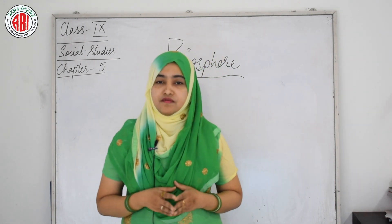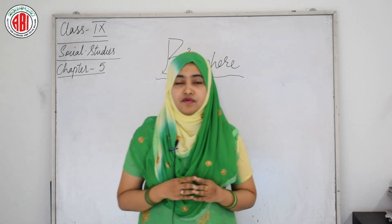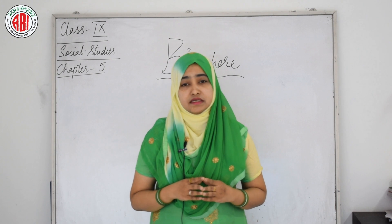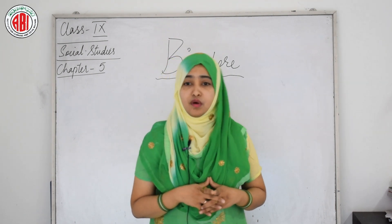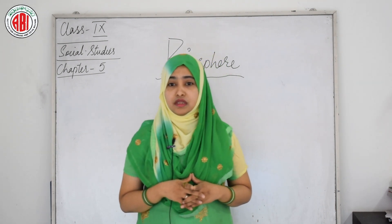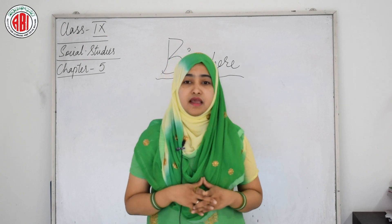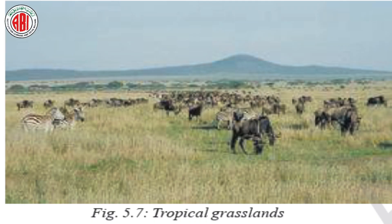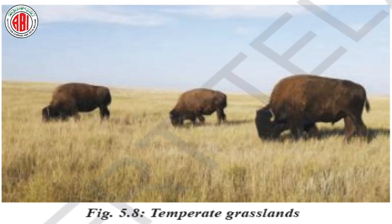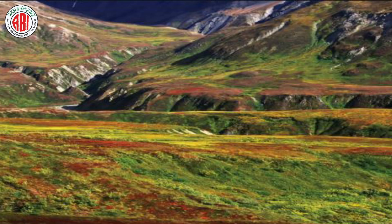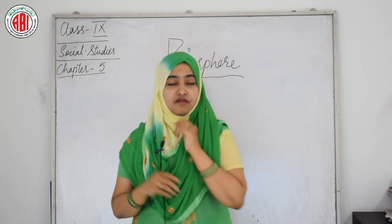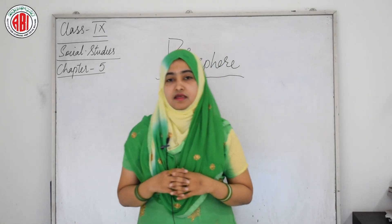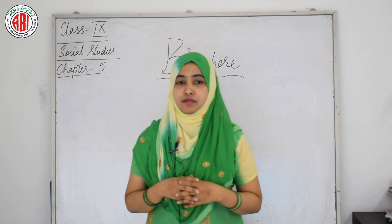After observing the different types of forests, we now discuss grasslands. The types of grasslands include tropical grasslands, temperate grasslands, thorn bushes, and tundra vegetation.